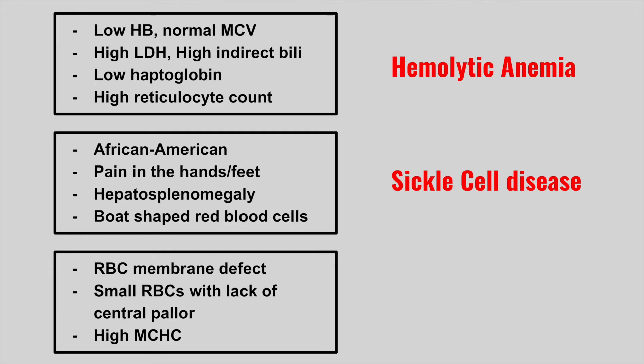The next patient is going to have a red blood cell membrane defect, small red blood cells with lack of central pallor, and a high MCHC. This is hereditary spherocytosis — an ankyrin or spectrin mutation that damages the RBC membrane. The osmotic fragility test will be positive. These patients have an increased risk of pigmented gallstones and may need a cholecystectomy or splenectomy.